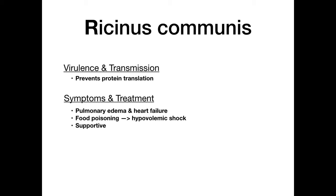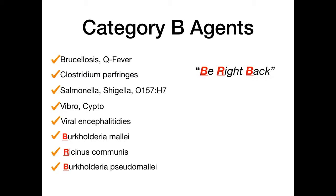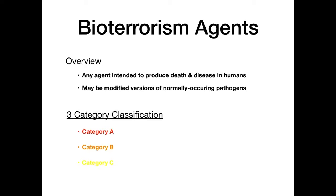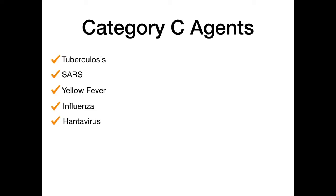That covers all category B agents — BRB: Burkholderia mallei, Ricinus communis, Burkholderia pseudomallei. Moving to category C, agents you already know include tuberculosis, SARS, yellow fever, influenza, and hantavirus. There are really only two category C agents you've probably never heard about: Nipah virus and chikungunya. The mnemonic for category C is 'Now C' — N for Nipah and C for chikungunya.